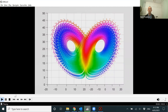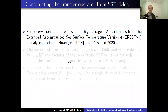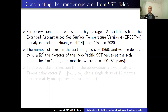Now to the ENSO situation. For the observational data, we use SST fields on a two-degree by two-degree latitude-longitude grid from observations over a 50-year period; they've been reanalyzed to correct for issues. The total number of pixels is about 5,000, so we think of this as a 5,000-dimensional vector. At each month we have a 5,000-dimensional vector, and with 50 years that means 600 months — a time series of length 600.